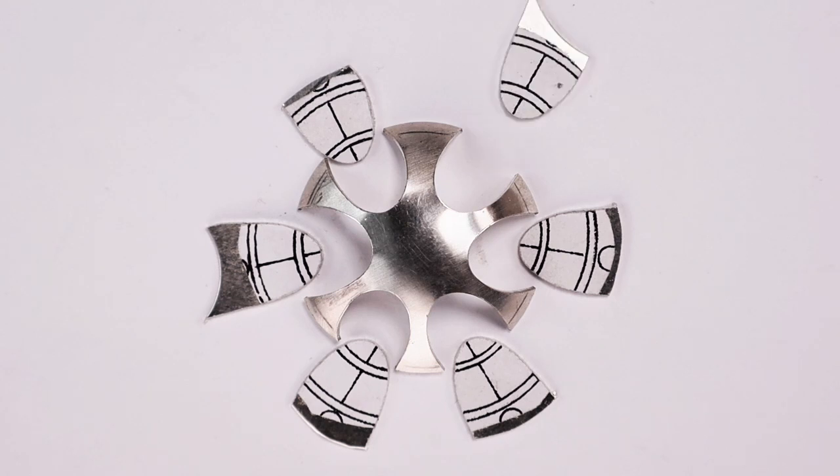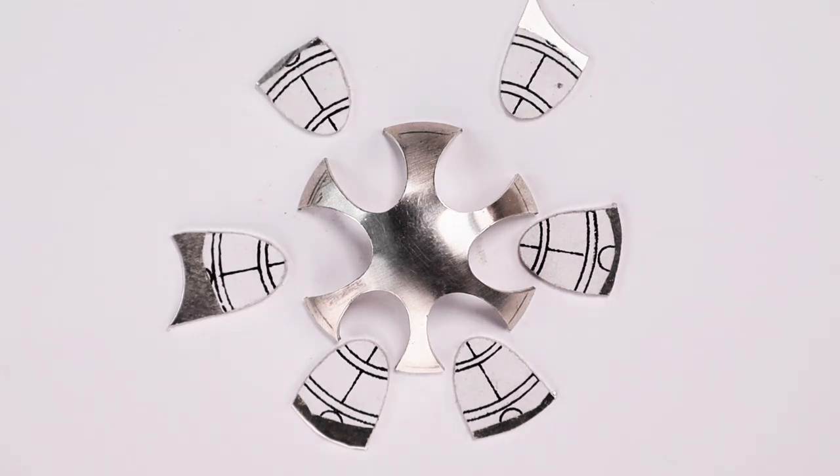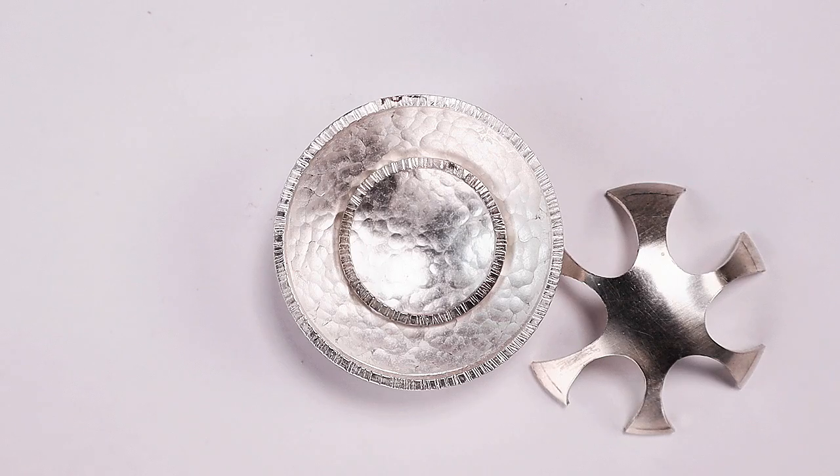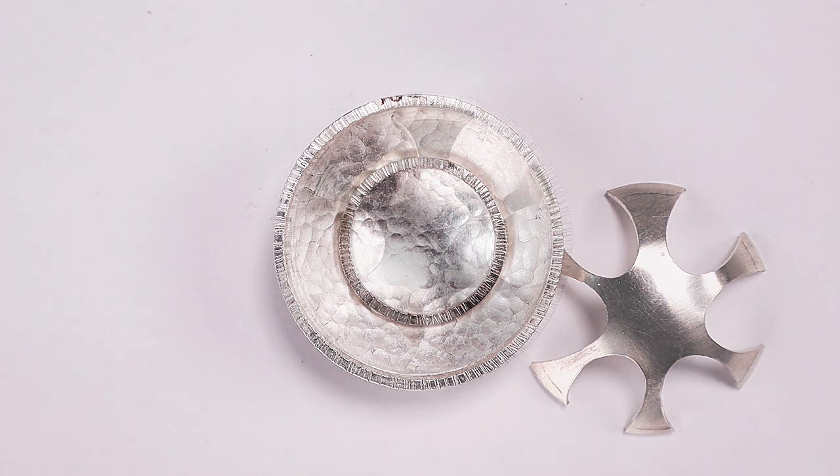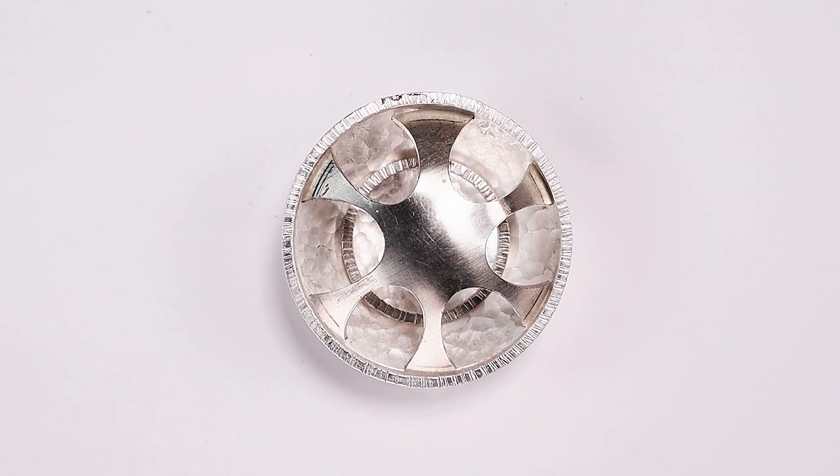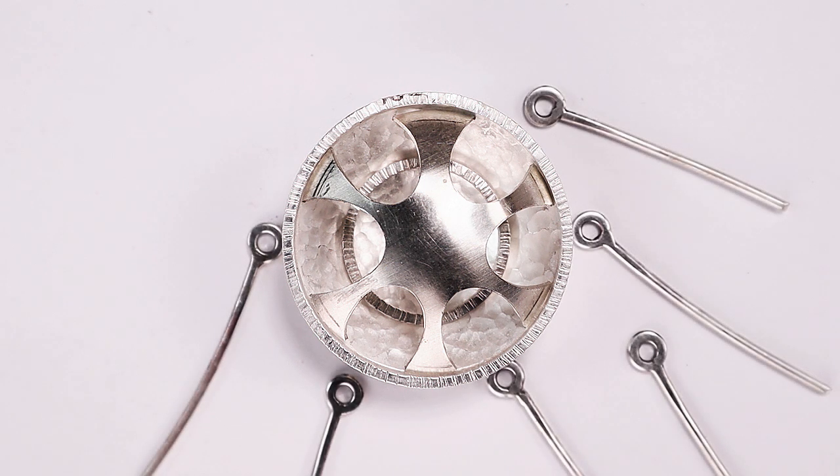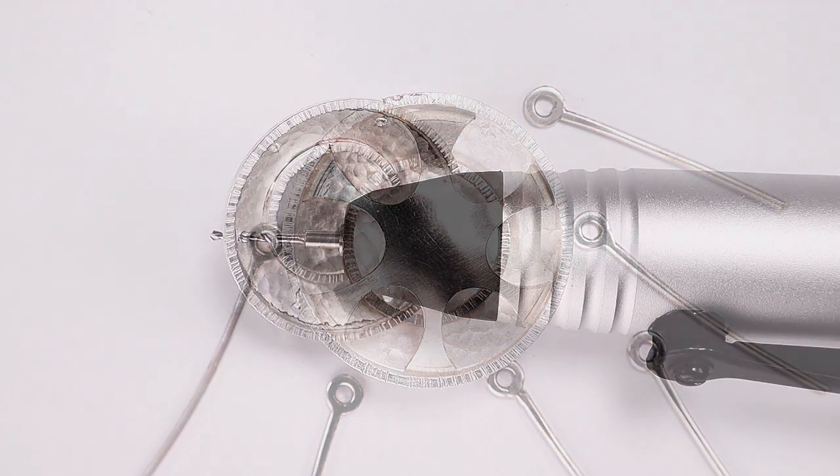The scalloped dome is sawed out with the jeweler's saw and that really gives it a really interesting shape. And that will go on top of the other domed piece to give it a real nice 3D quality. Let's not forget about those jump rings that are going around the outside. How do we get those on and maybe add some other visual interest?